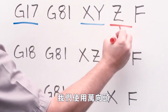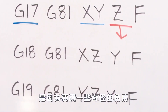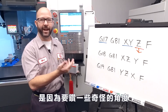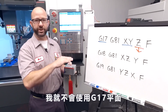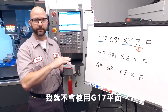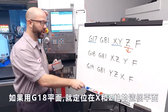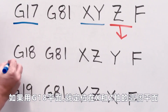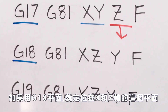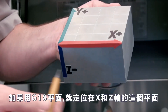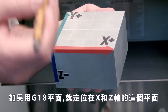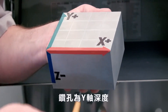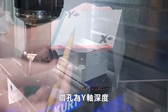Now if we're using a right-angled head, it's because we want to drill at some angle — we don't want to be using our G17 plane. If we use a G18 plane, this means that we're going to be positioning ourselves along the X and the Z axis and drilling to a Y depth.